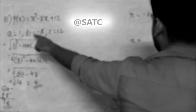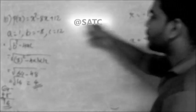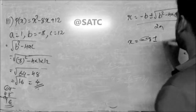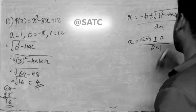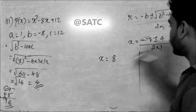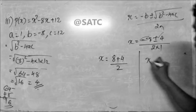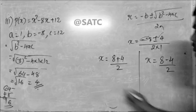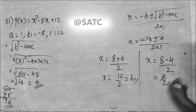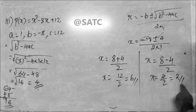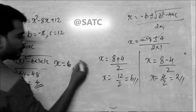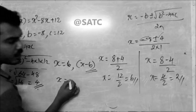X is equal to — what is the value of b? B squared minus 4, and x is equal to minus 4. X is equal to 6. X with 6 gives 6.